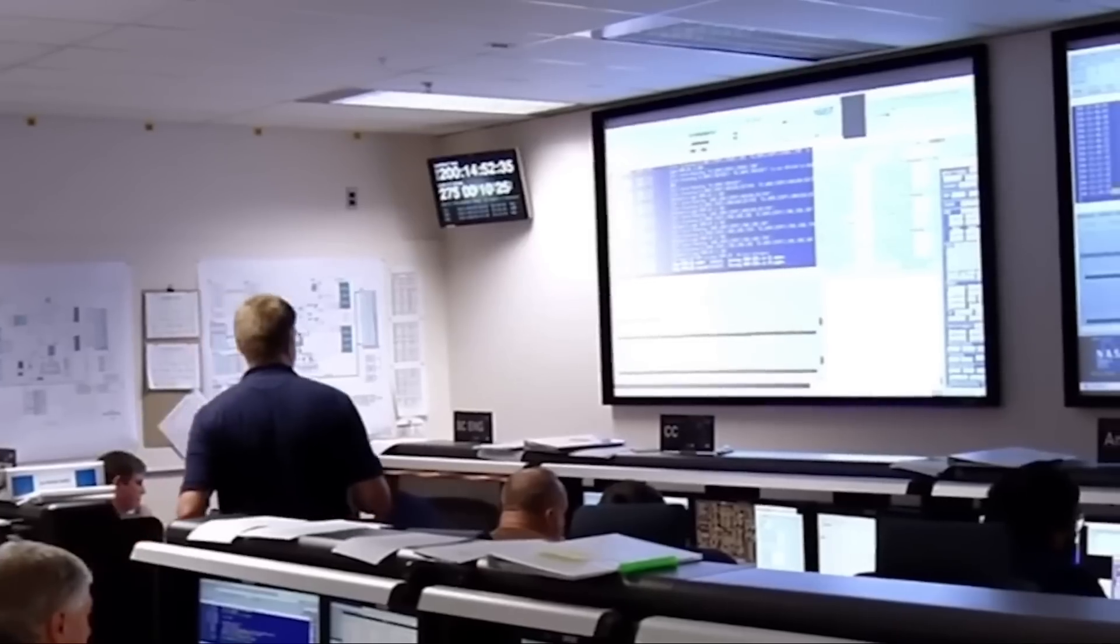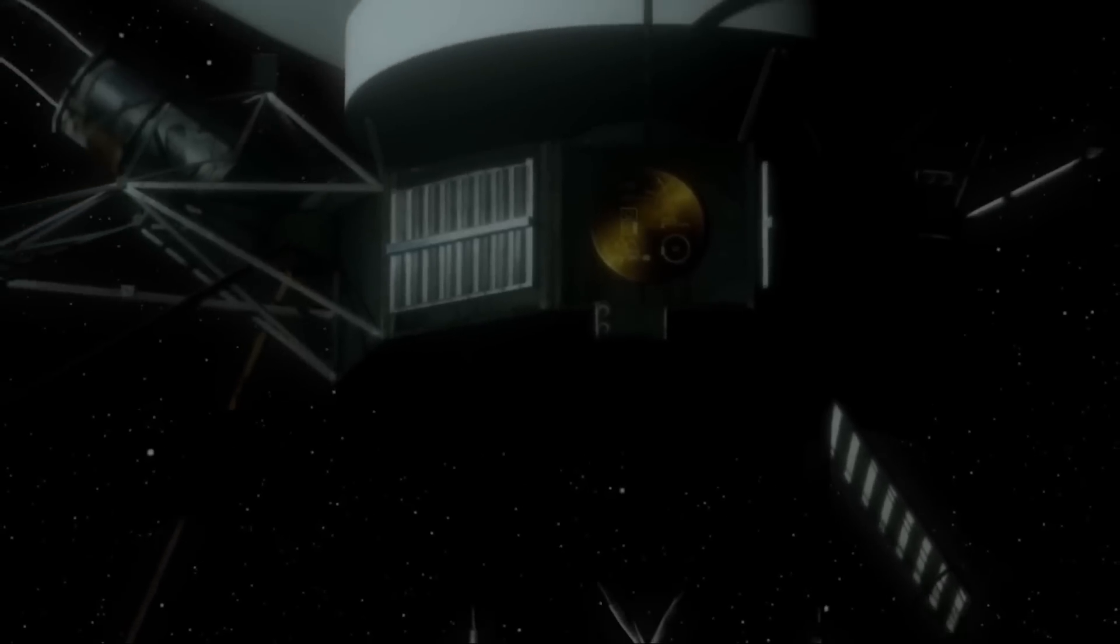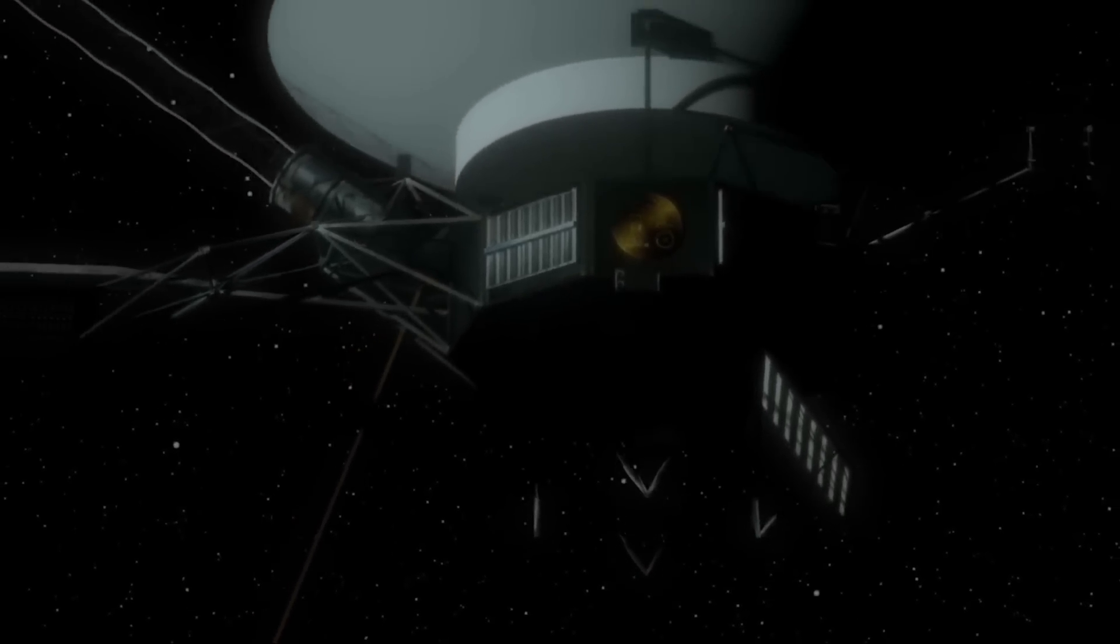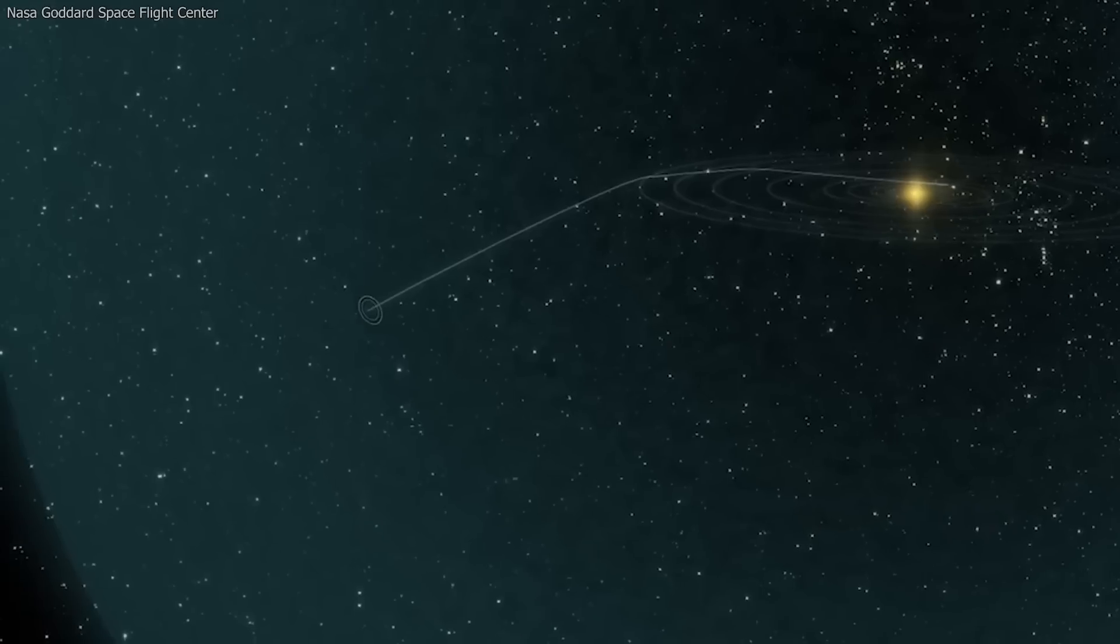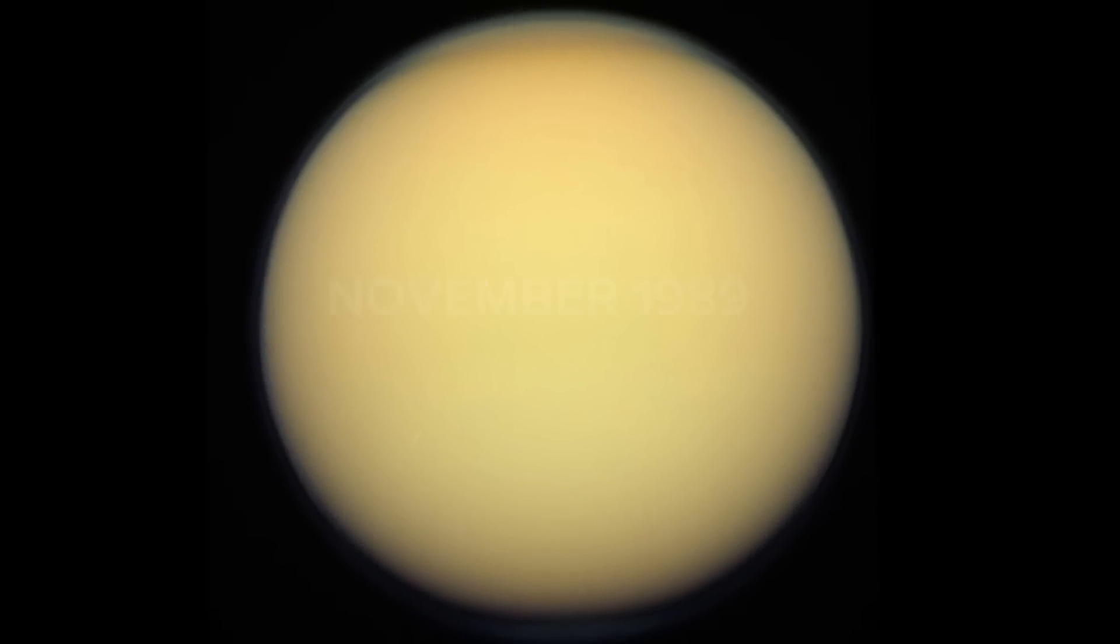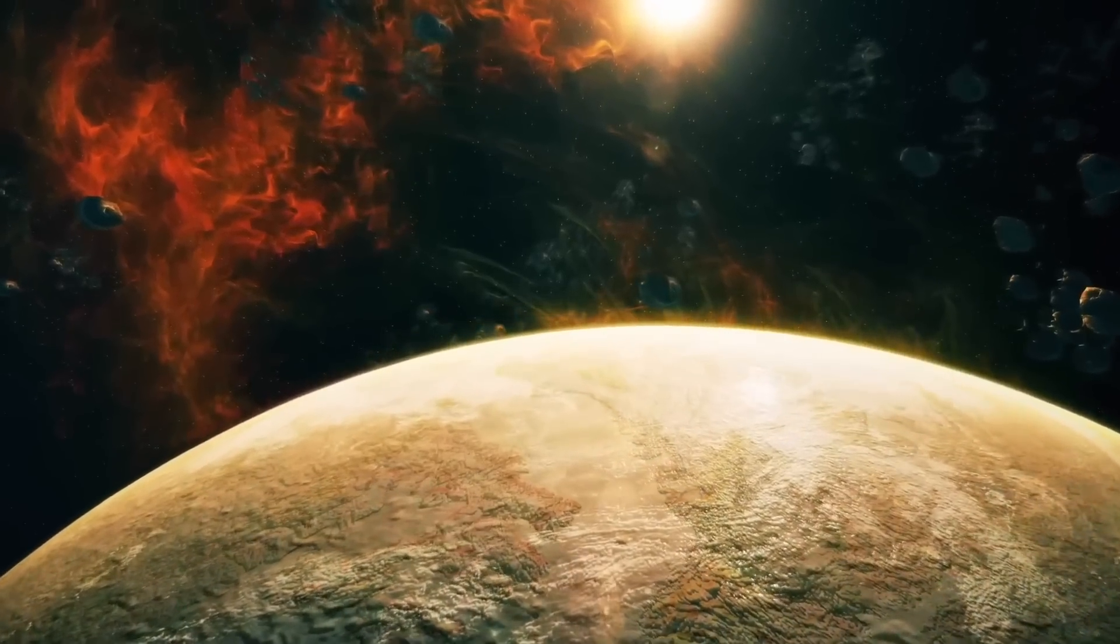While Voyager 2 continued its exploration, Voyager 1, having completed its primary mission, embarked on a trajectory that would lead it out of the plane of the planets and into interstellar space. On its way, it made a close flyby of Saturn's moon Titan in November 1980, unveiling its hazy atmosphere and providing valuable insights into the moon's surface features.